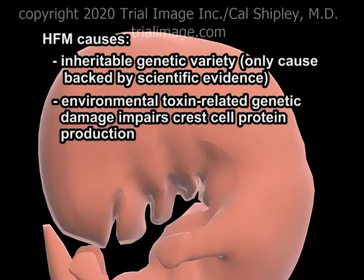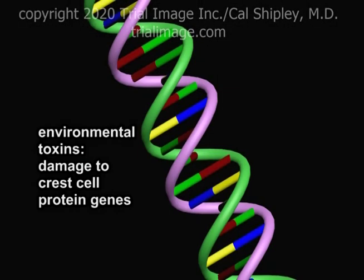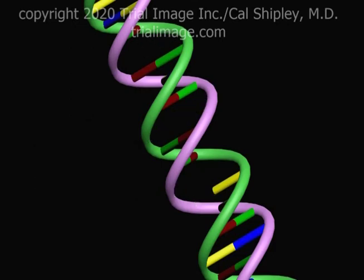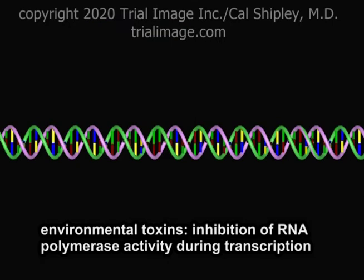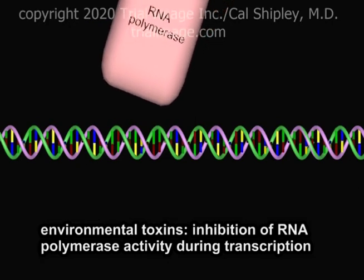Another proposed but as yet unproven cause of HFM involves genetic damage caused by environmental toxins. The toxins are passed from mother to fetus and then interfere with neural crest cell protein production, either through damage to protein genes on the DNA strand or inhibition of RNA polymerase activity during transcription.